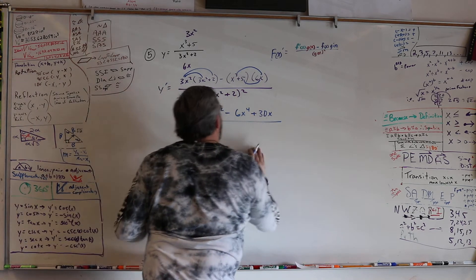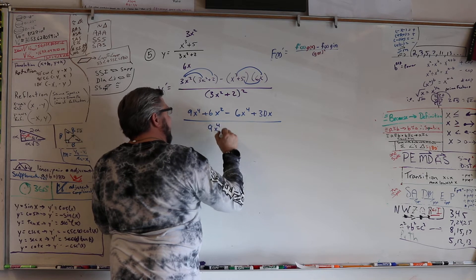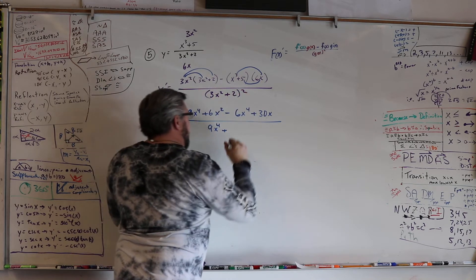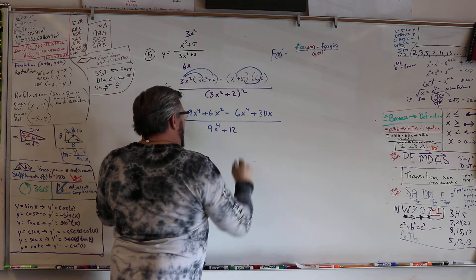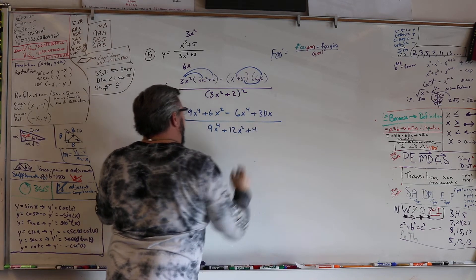All over, that squared is 9x to the fourth, plus 2 times 2 times 3, that's 4 times 3, is 12x squared, and this squared would be plus 4.